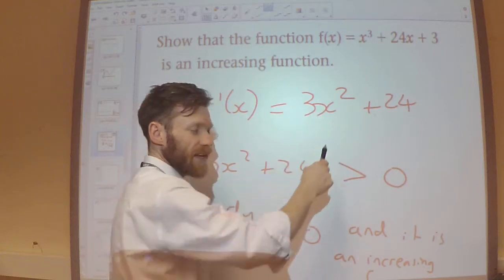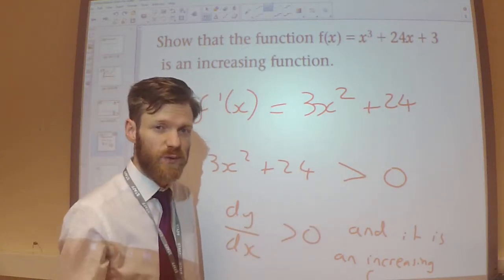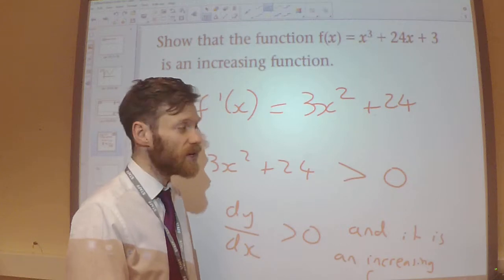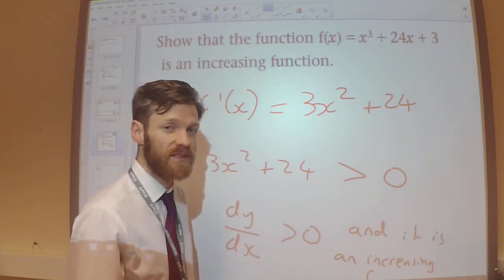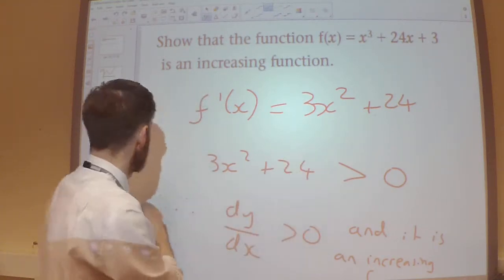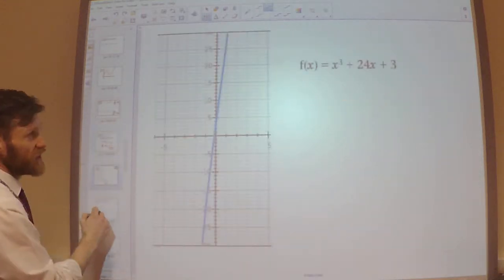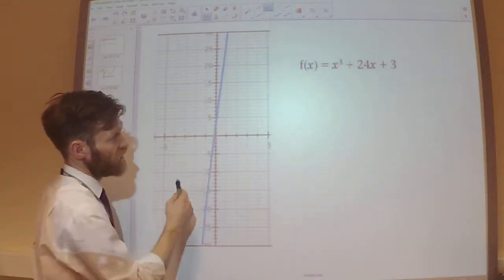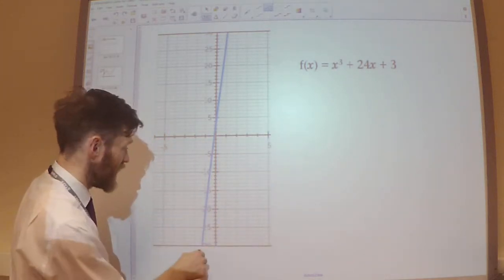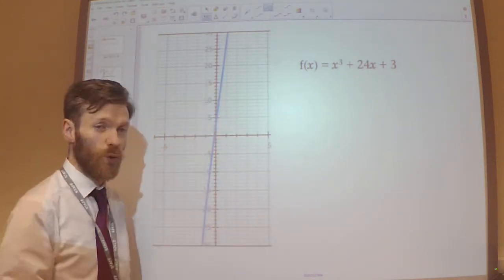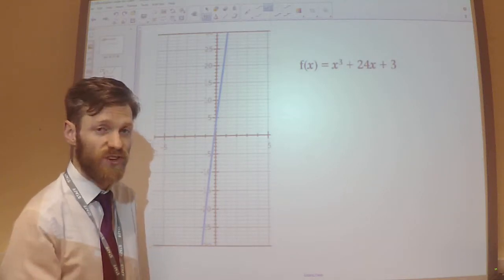If you get a slightly more complicated equation, just complete the square — that's how you're going to prove that something's always going to be positive. Just to prove that, I've sketched it out. So this is the curve of x cubed plus 24x plus 3, and you can see that it is always an increasing function.